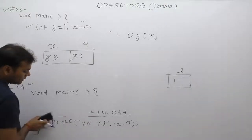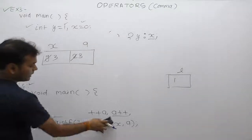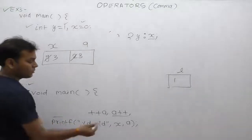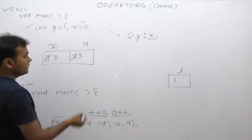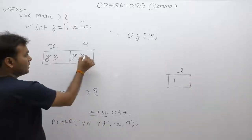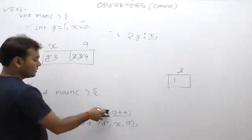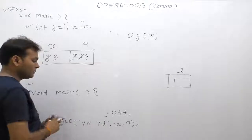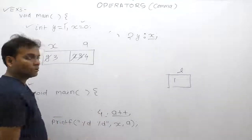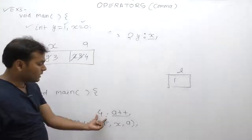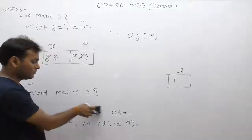Now solving the second expression after the comma: a is incremented from 3 to 4. The incremented value 4 is used, but since it is not assigned to any variable, this expression is removed after evaluation.